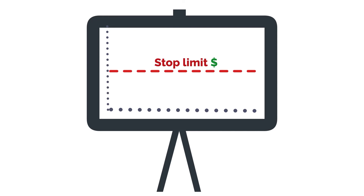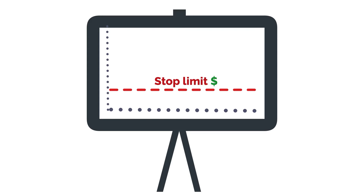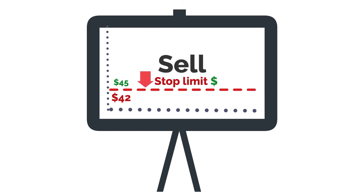A stop limit order triggers at a specific price and sets the threshold where it will fill. Let's say you want to set a stop limit order but not get too low of an asking price. So you set a trigger point of $45 and specify your desired purchase price as $42. If the stock falls down to $45, there is no sale triggered yet because it is still above $42, meaning that if the next trade happens below that amount, the sell order would not be executed.